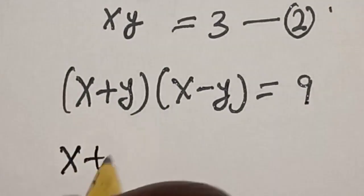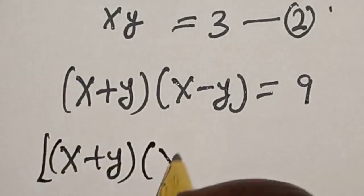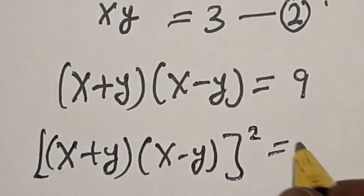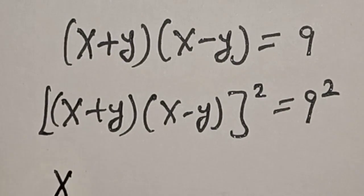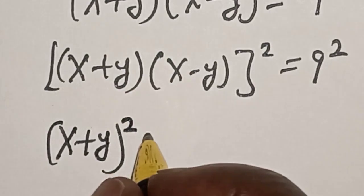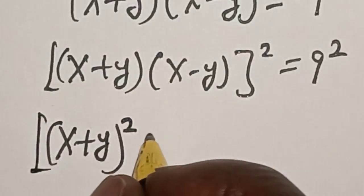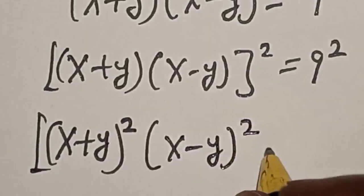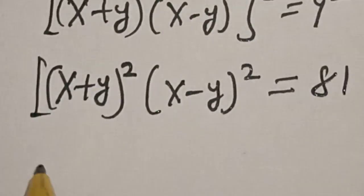Now let's square both sides. We have x plus y multiplied by x minus y, all squared, is equal to 9 squared. This is the same as x plus y squared multiplied by x minus y squared is equal to 81.